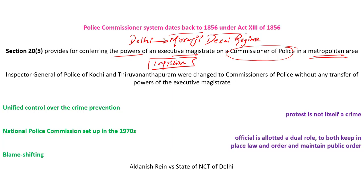The commissionerate system is used in metropolitan areas for faster decision-making to solve complex urban issues. The police commissioner's office also holds magisterial powers including control over licensing and regulation — powers previously held by the district magistrate. Under the commissionerate system, the commissioner does not report to the district magistrate. However, these powers vary from state to state because police comes under the state list, so each state can make its own laws.